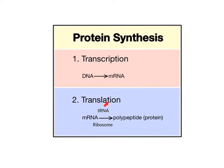In translation, the messenger RNA transcript or copy moves out of the nucleus and into the cytoplasm, where it's translated with the help of ribosomes into a protein or polypeptide. There's another molecule of RNA called transfer RNA, symbolized as tRNA, that helps bring amino acids to the growing polypeptide chain. Translation refers to the fact that the chemical language of RNA is being converted into a different chemical language of protein.